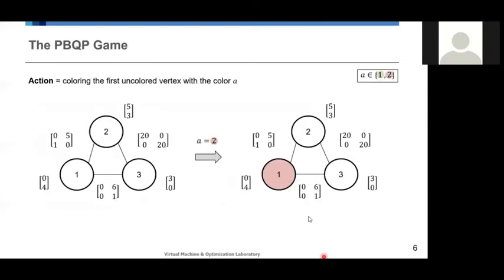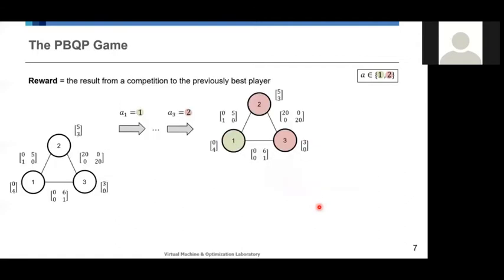First, an action can be defined to decide one color for the vertex with the lowest number remaining uncolored in the graph. Therefore, if the number of colors allowed are only 2, which are denoted by 1 for green and 2 for red, the action A can be either 1 or 2. In this example, if the agent takes an action number 2, it means that the agent is coloring the vertex number 1 with color red.